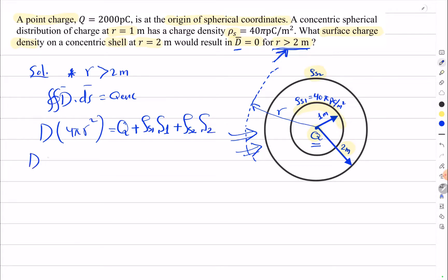So D times 4π r squared equals Q which is 2000 picocoulombs, plus ρ_s1 which is 40 picocoulombs per square meter.